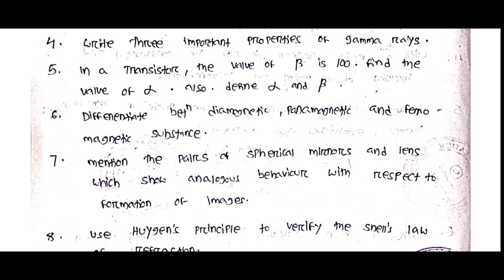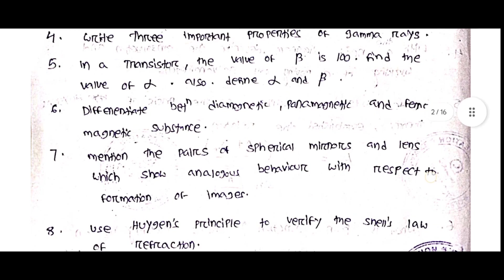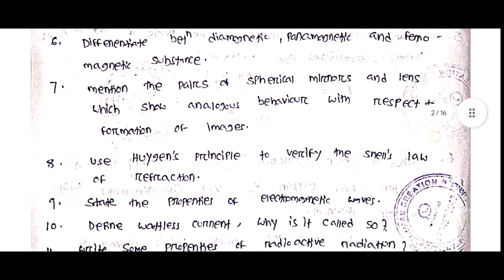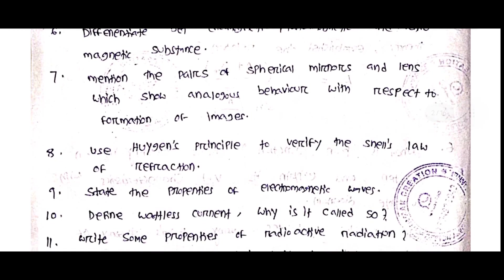Differentiate between diamagnetic, paramagnetic, and ferromagnetic substances. Then, mention the pairs of spherical mirrors and lenses which show analogous behavior with respect to formation of images. Next, use Huygens' principle to verify Snell's law of refraction.